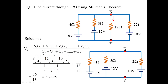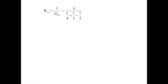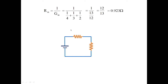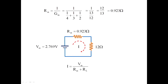Now once we obtain the value of Vm, let us obtain the value of Rm. Rm equals 1/Gm, which equals 1 divided by (1/4 plus 1/3 plus 1/2), which equals 1 divided by 13/12, which equals 12/13. Technically the value is 0.923 ohms. Now we connect the load of 12 ohms, with Vm equal to 2.769 volts and Rm equal to 0.923 ohms. Finally, the current I equals Vm divided by (Rm plus R_load) equals 2.769 divided by (0.923 plus 12), giving a value of 0.21426 Amps.